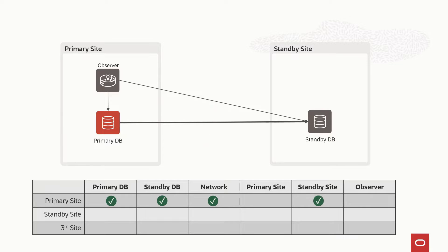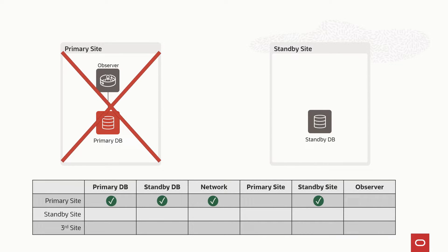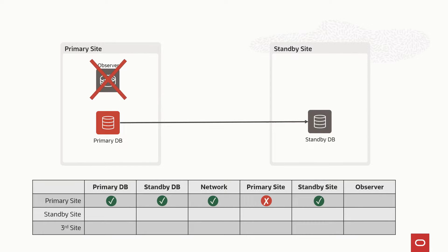But what if we lose the full primary site? In this situation, we lose at the same time the primary database and the observer, and there is no more quorum with the standby. Therefore, there is nothing that can initiate an automatic failover. If we have lost the full primary site, this is a situation where we have to trigger a manual failover — this is the gap of having the observer on the primary site. And if we just lose the observer, the primary and standby will still have connectivity, so the primary is still protected and can keep writing, but without an observer watching the Fast Start Failover configuration.